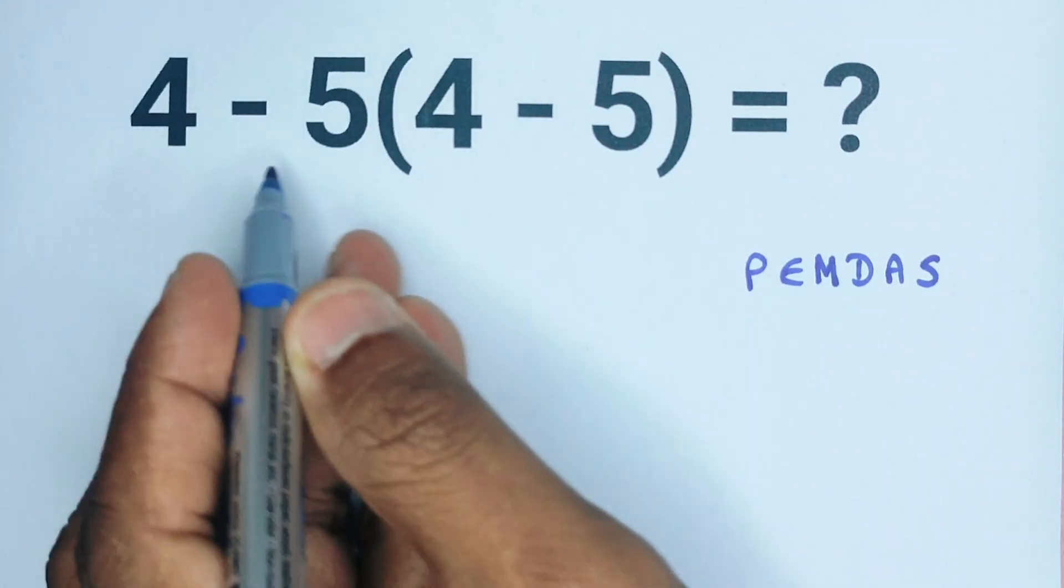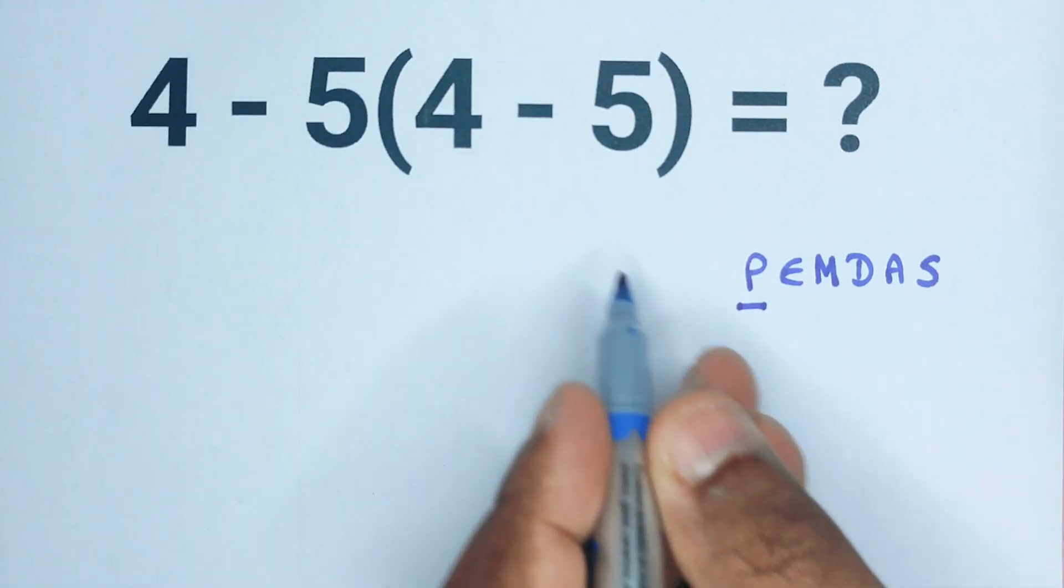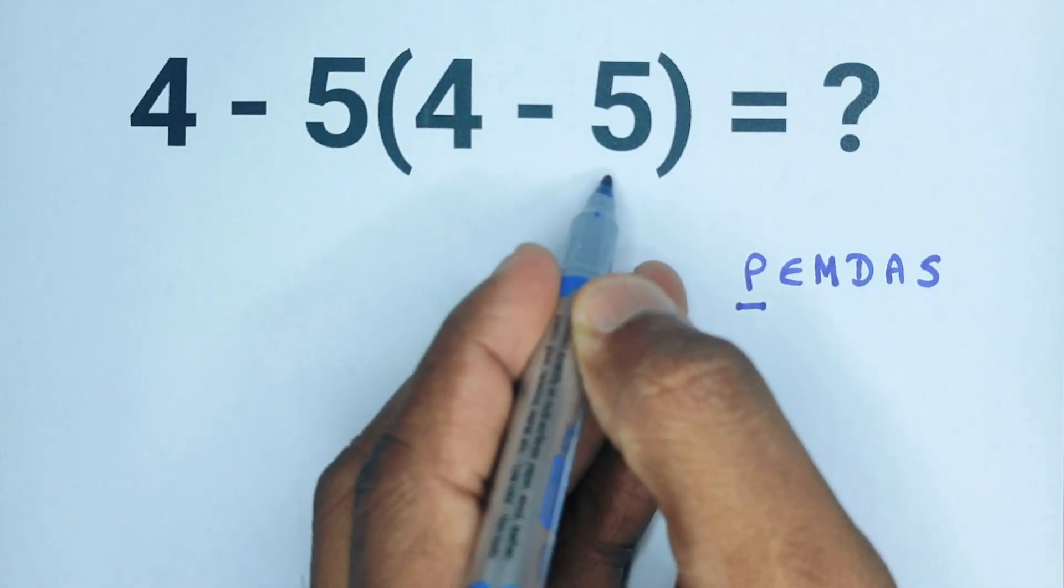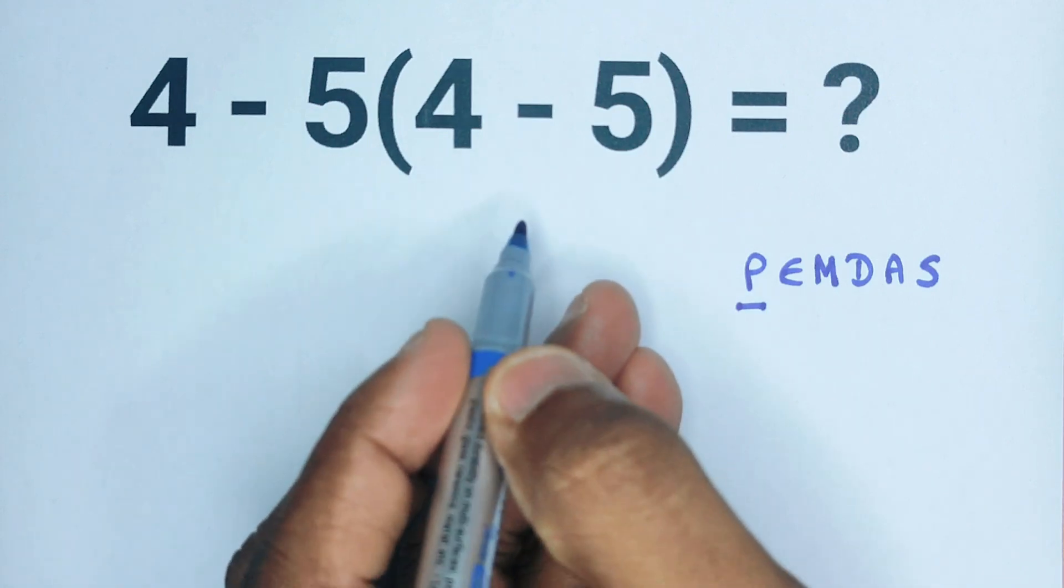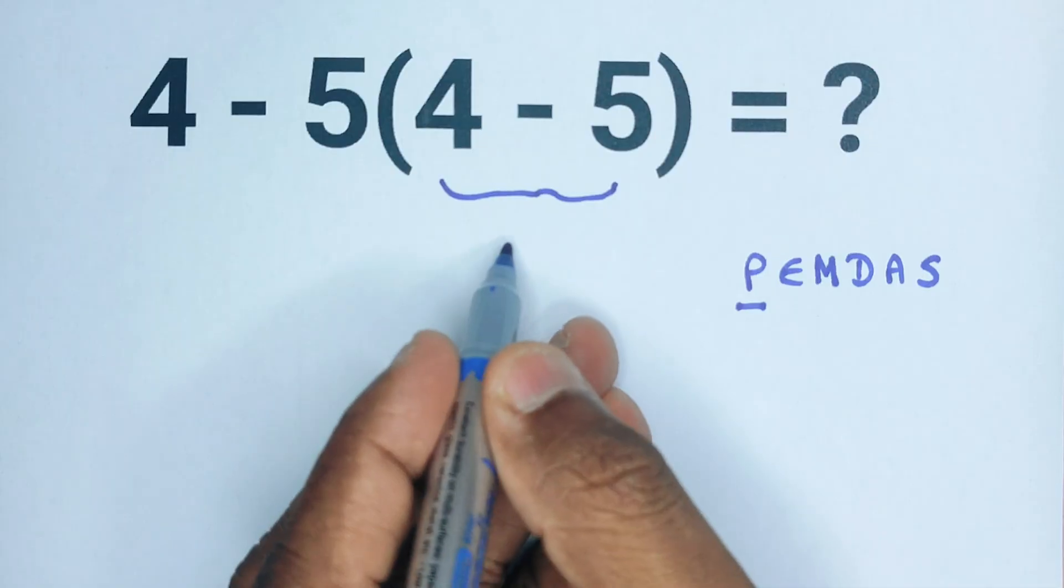Now let's apply PEMDAS to this expression. First we look for parenthesis and here we have one. So let's solve what's inside the parenthesis first. We have 4 minus 5 which equals negative 1.